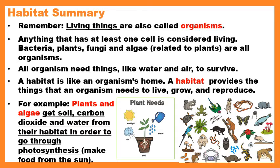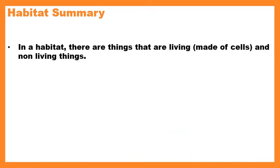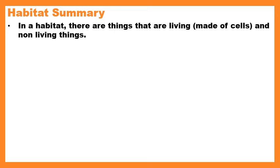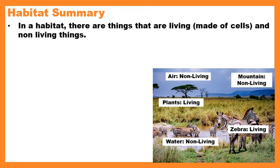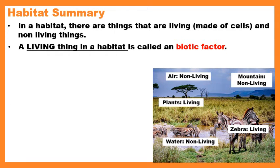Within a habitat there are things that are living — made out of cells — and non-living things — not made out of cells. For example, looking at this picture of a zebra at a watering hole, the living things I can see are the zebra and the plants. But there are also non-living things: water is not made of cells so it's non-living, air is not made of cells so it's non-living, and the mountains in the background are made of rock, which is not made of cells so it's non-living. But living things still depend on that stuff — they can't live without water.